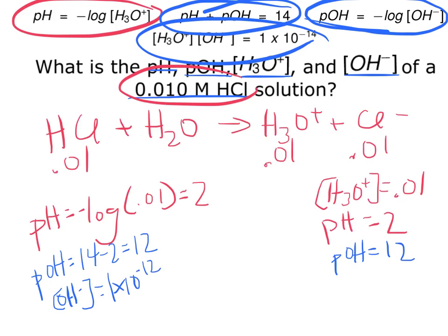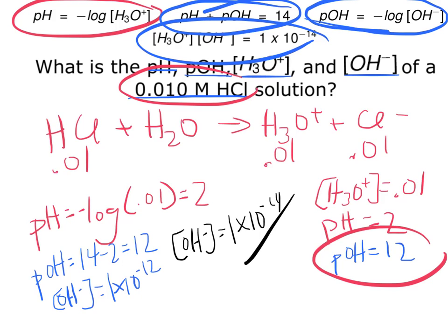because it's 10 to the negative pOH from over here. Or it can be OH- is 1 times 10^-14 divided by H3O+, which is in this case 0.01. And that will again equal the same answer.